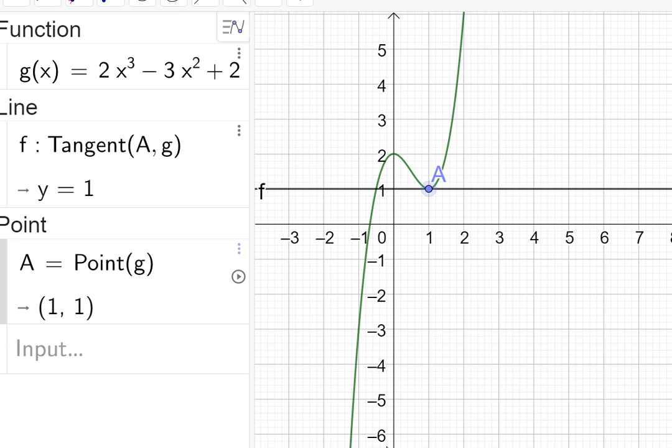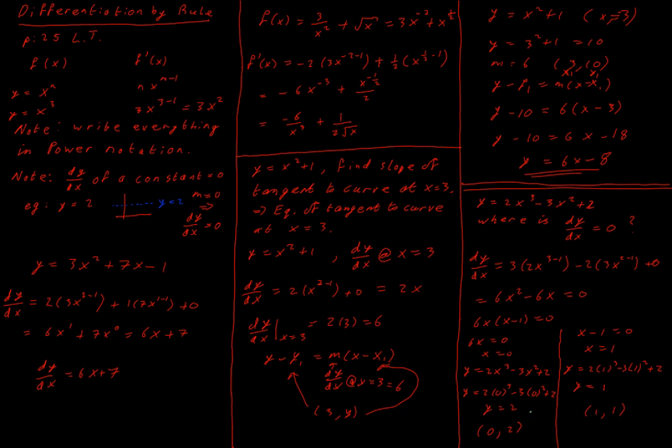So going back to our normal writing, if we have a function and we're looking for where dy/dx equals a particular number, find dy/dx and then set it equal to the number you're asked about. And dy/dx being equal to zero will be how we will find the turning points of our function later on.